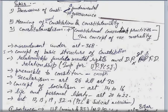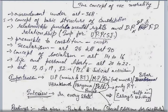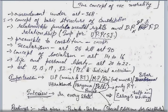This is an important topic with respect to the UP Judiciary. Then we will see the preamble of the constitution, and from the preamble we will pick out some concepts. Then the topic of secularism — Articles 25 to 30, related to freedom of religion and educational rights. Then socialism — Articles 14 to 16, the concept of equality, reservation. Then life and personal liberty — Articles 20 to 22. Then Articles 12, 13, 19, and 32. Then PIL and judicial activism.